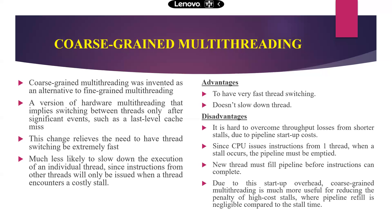The advantages of coarse-grained multi-threading: very fast thread switching and it doesn't slow down threads. The drawback: it is hard to overcome throughput losses from short stalls due to pipeline startup cost. Since the CPU issues instructions from one thread, when a stall occurs the pipeline must be emptied and a new thread must fill the pipeline before instructions can complete.